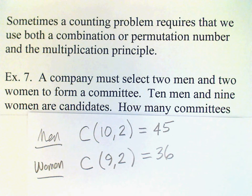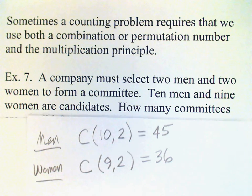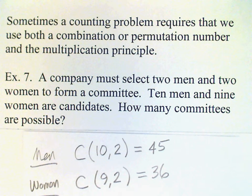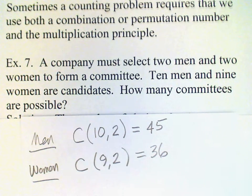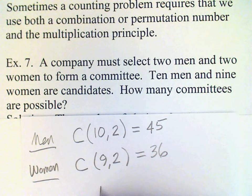Now we have two different counts here and our fundamental counting principle tells us when we have two counts in one problem then we get the final answer by multiplying those two counts. So the total is 45 times 36.